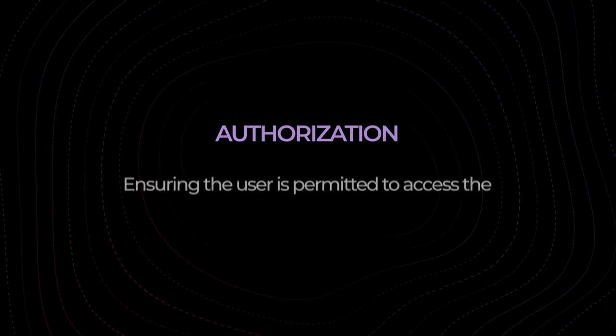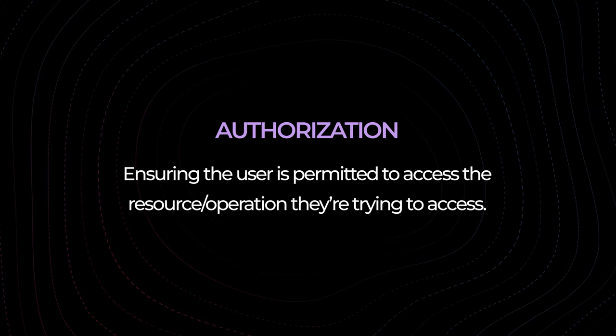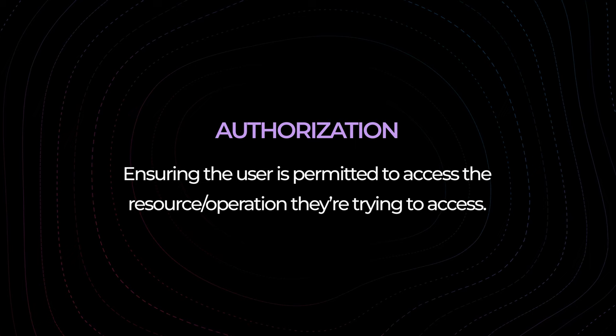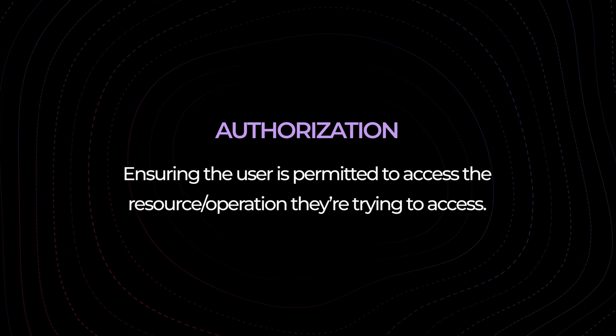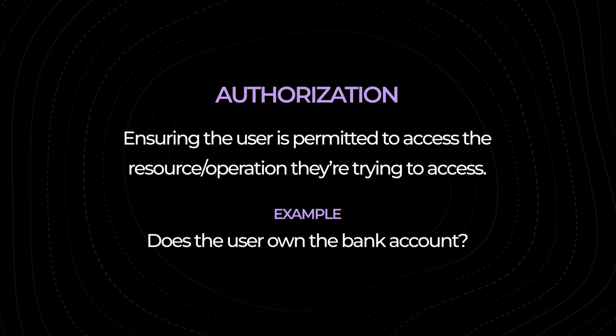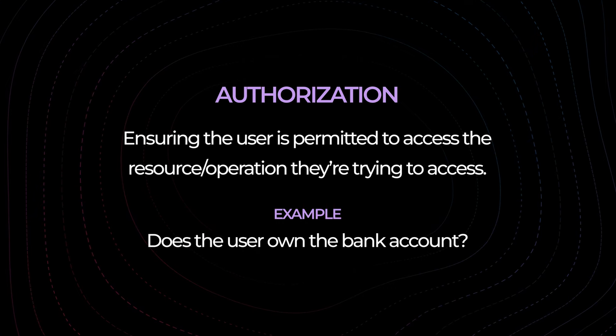The access token is a JSON web token and it's used for authorization. Authorization is the process of verifying your permissions to make sure you have access to the actions, resources, or services you are trying to access — for example, do you actually own the account you're trying to check the balance for? The authorization part is where many applications use JSON web tokens. These are usually provided in the authorization header as a bearer token.